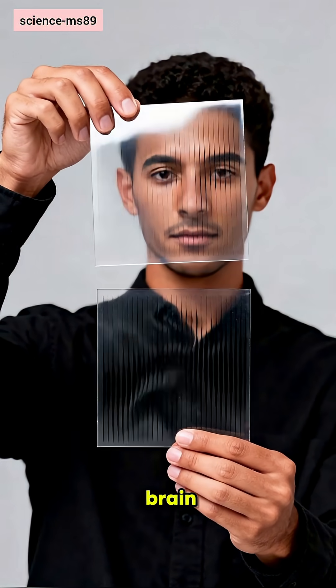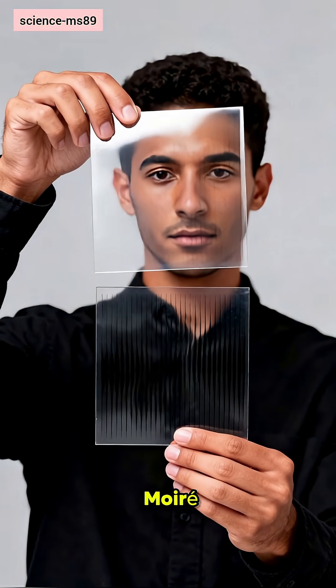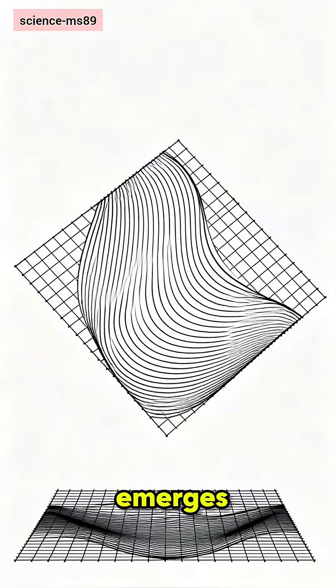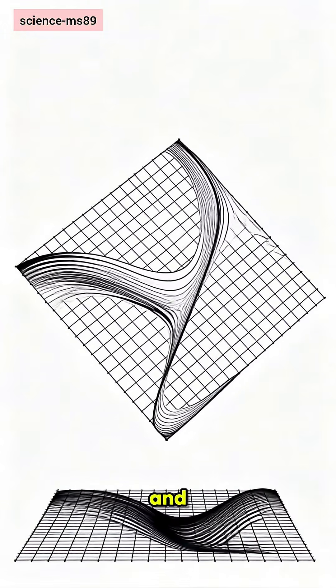These lines aren't moving, your brain is. Meet the moiré effect. Moiré emerges when two repeating patterns overlap and slightly shift, creating interference that looks like motion, depth, or distortion.